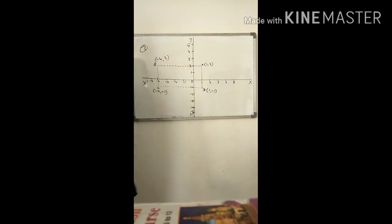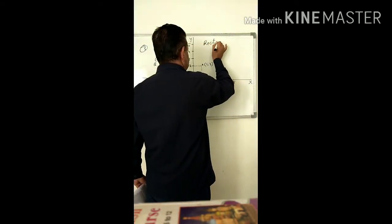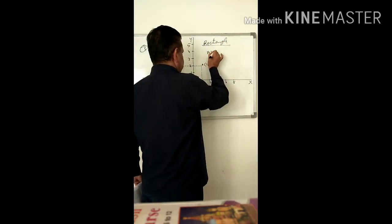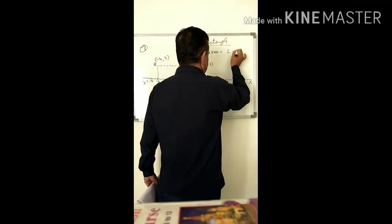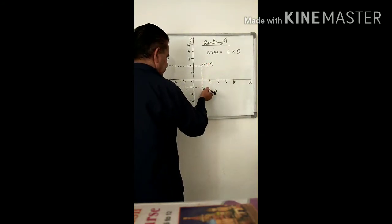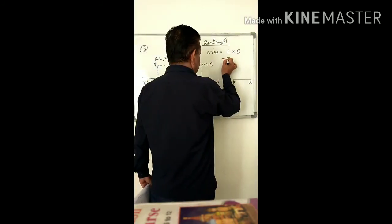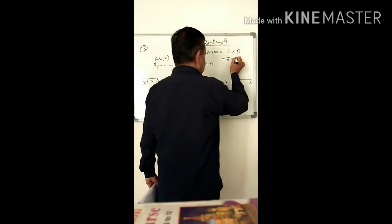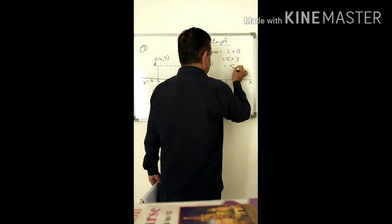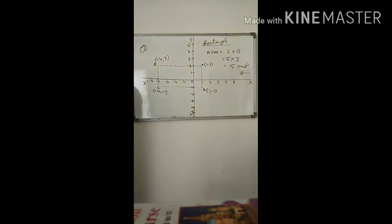You know this is a rectangle. Area of rectangle equals length into breadth. Length is 5 and breadth is 3. Area equals 15 unit square. This is your answer.